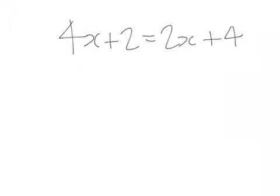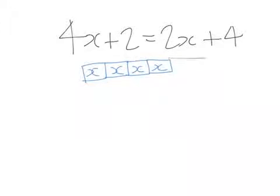Now I'm going to use the bar model to represent this as I go through. So I'm going to make equal blocks of blue for my x's, as equal as I can make them. So we have 4x and I'm going to make a block in red for the positive 2. So this is the expression on the left hand side of my equation.